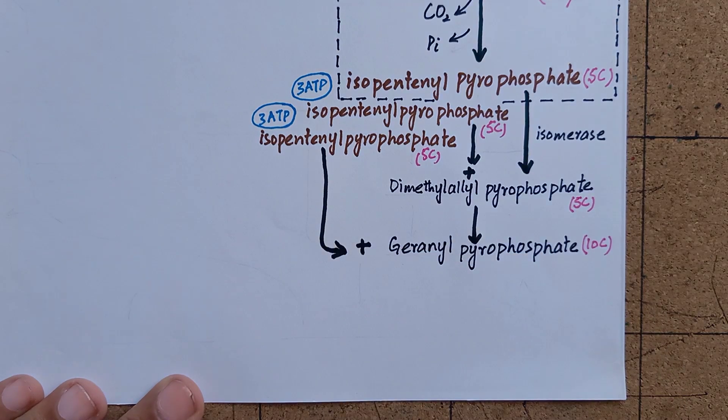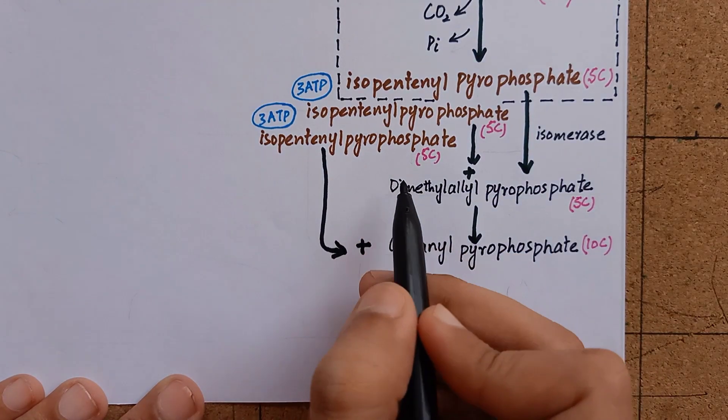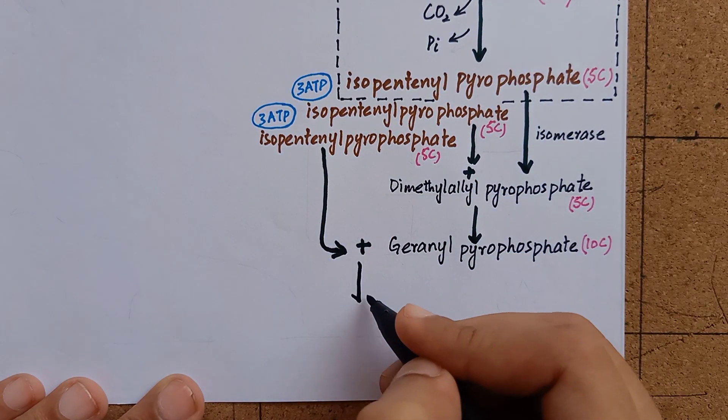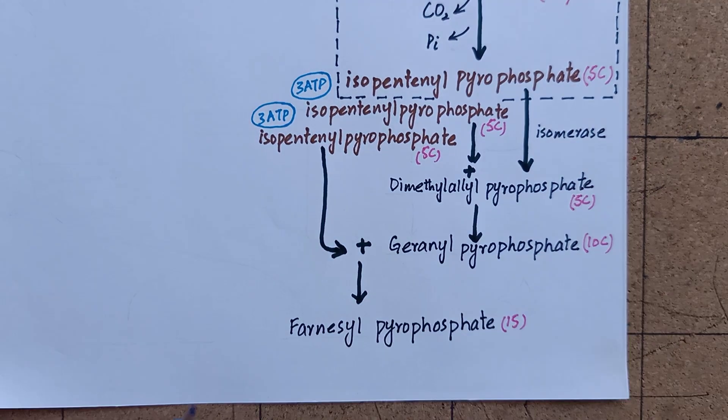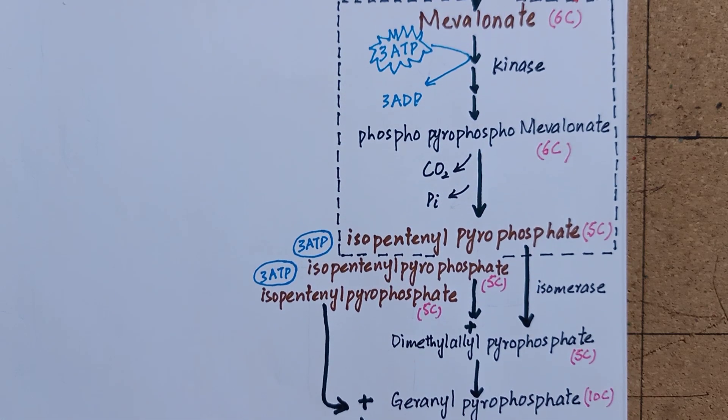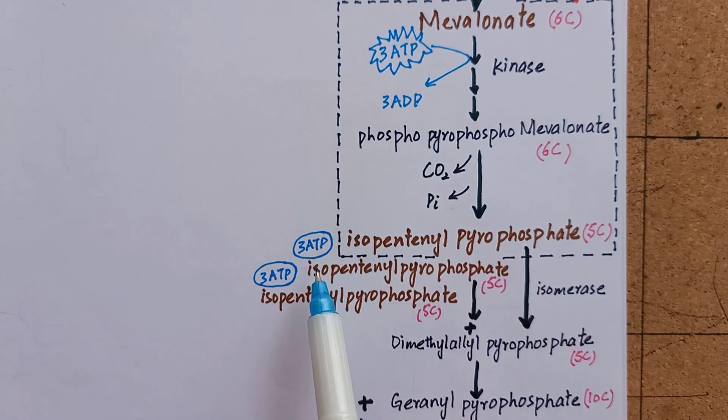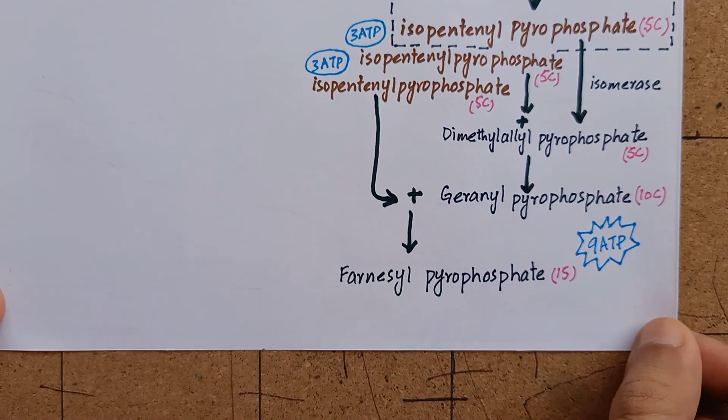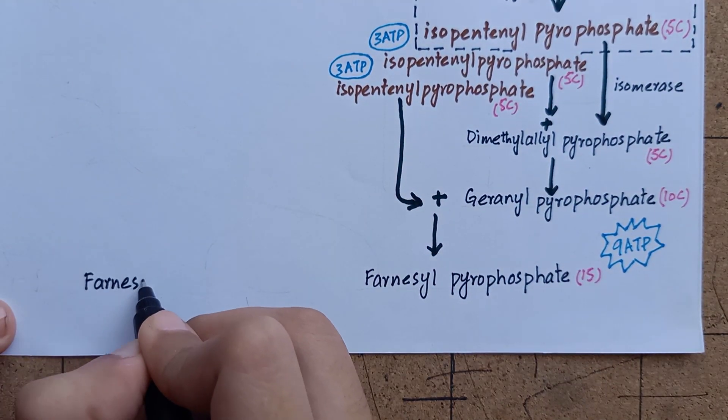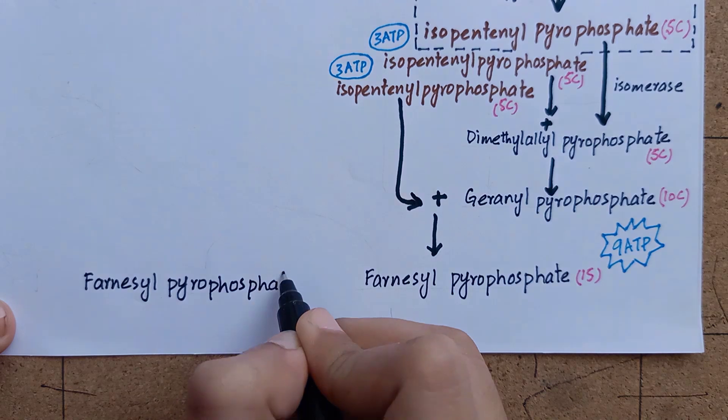Another molecule of isopentenyl pyrophosphate condenses with geranyl pyrophosphate to form farnesyl pyrophosphate, which is a 15-carbon compound. Farnesyl pyrophosphate is produced with an expenditure of 9 moles of ATP. This whole process will repeat itself to produce another farnesyl pyrophosphate with utilization of another 9 moles of ATP.